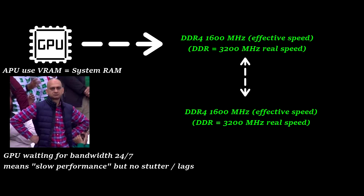As you saw, there is no difference in frames and frame times when using less VRAM than minimally needed. This behavior can be seen in all games with an APU. There are more comparisons on YouTube, but I try to keep it simple and small.